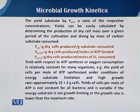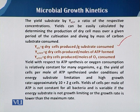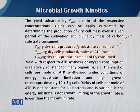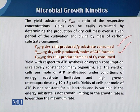Growth yield can be expressed in a first condition as how much dry cell mass is produced and how much substrate is utilized — that is, the ratio between the substrate utilization and the cell mass produced. In the second case, it is the change in biomass concentration relative to the ATP formed.